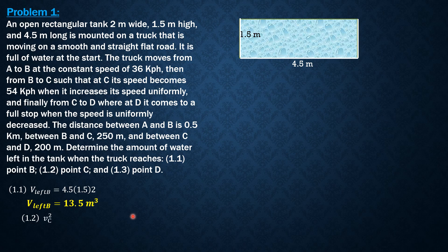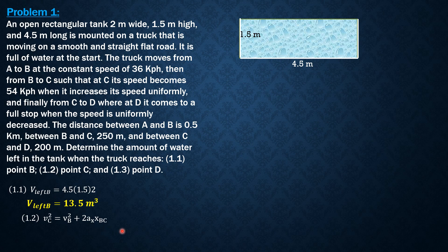So that is v_C^2 = v_B^2 + 2a_x x_BC, where v_B is 36 kilometers per hour divided by 3.6, the conversion factor, so that it becomes meters per second. So 36 over 3.6 is 10 meters per second, while v_C is 54 divided by 3.6, so that would be 15 meters per second.